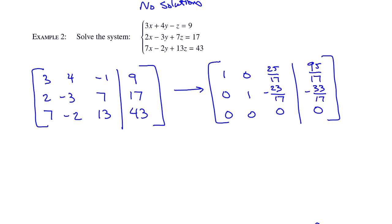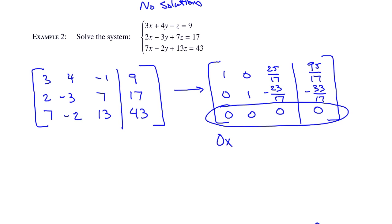Again, we have a very strange last row. Remember, one of the conditions for being in reduced row echelon form is that all rows containing only zeros are found at the bottom. Here's one of those all-zero rows. If we revert this back to an equation, we get 0x plus 0y plus 0z equals 0. The left side reduces to 0 equals 0, and that's okay — that's not a problem.